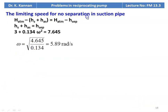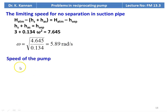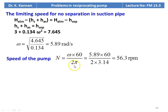Limiting speed for no separation in the suction pipe: HS + H_AS = H_separation, so 3 + 0.134ω² = 7.645. Thus ω = √(4.645/0.134) = 5.89 rad/s. Speed N = 5.89 × 60/(2×3.14) = 56.3 RPM.